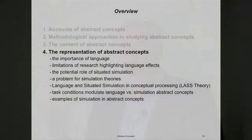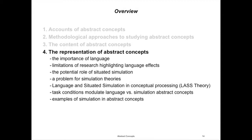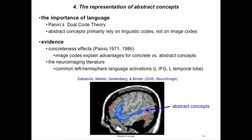Those are the introductory things I wanted to talk about. Now I want to focus primarily on the representation of abstract concepts, and I'm going to talk about the roles of language, the roles of simulation, and then the integration of these two in representing and processing abstract concepts. In terms of the empirical evidence that bears on how abstract concepts are represented, the overwhelming message in both the behavioral and the neuroscience literatures is that abstract concepts are represented with language.